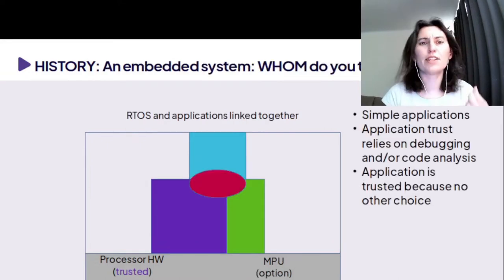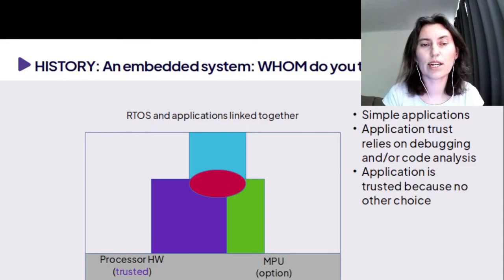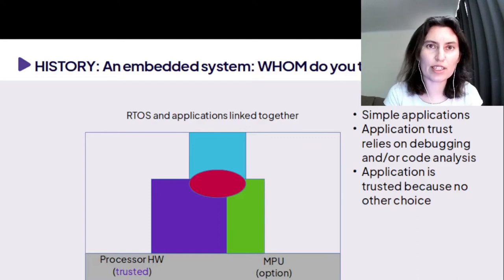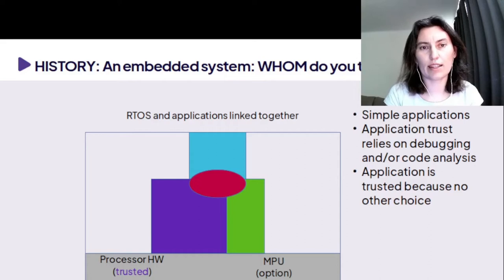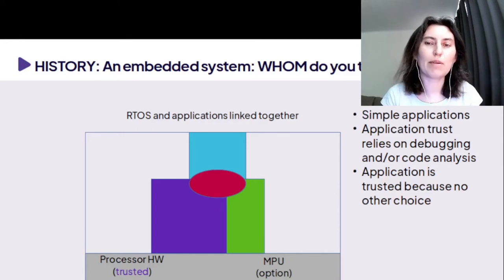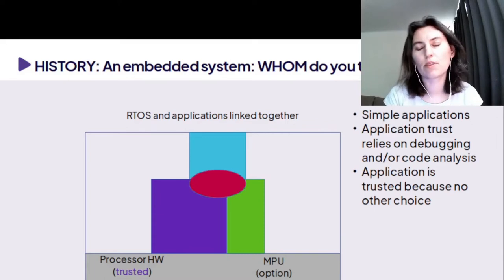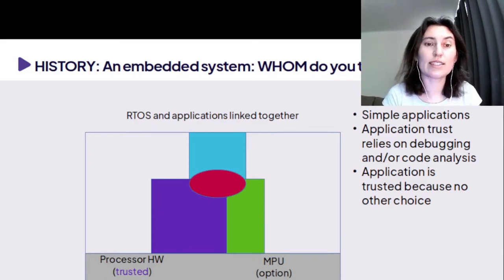It's a little bit different in a traditional embedded system. In a traditional embedded system, we do not have an MMU — quite often we have an MPU as an option. In this case, applications and the operating system were all linked together and also running from the same memory space. That means that an application could access data of different applications, maybe even of the operating system, and could modify it depending on whether the MPU is set up or not.